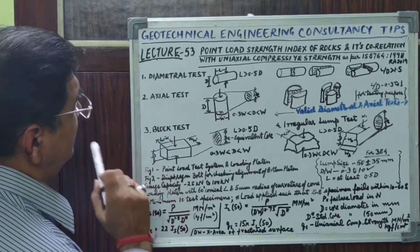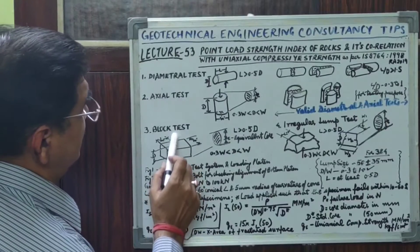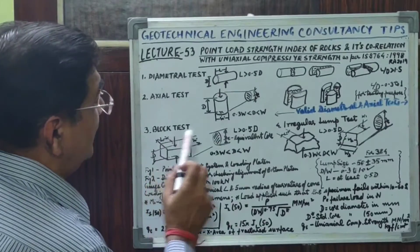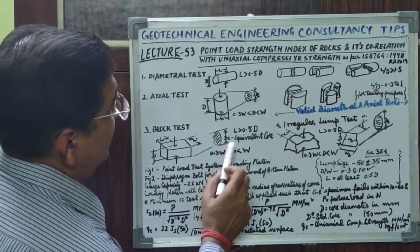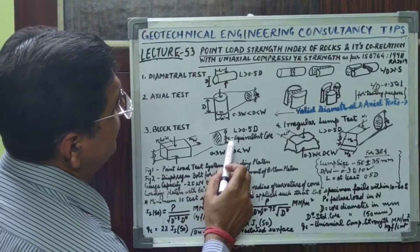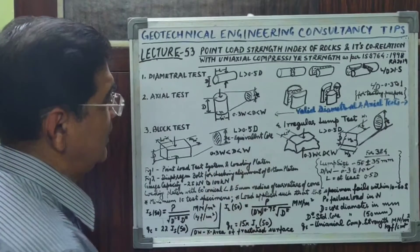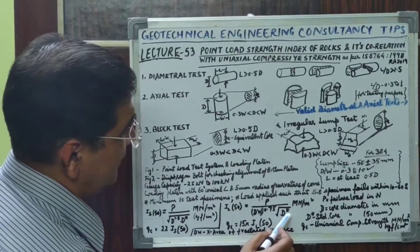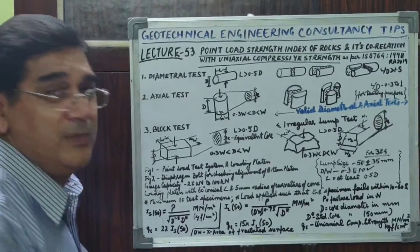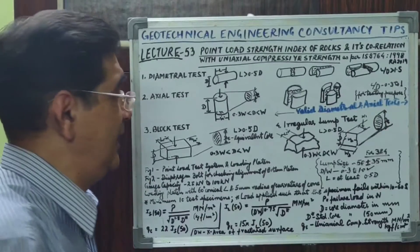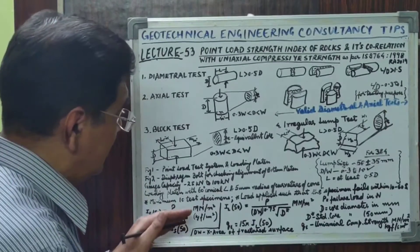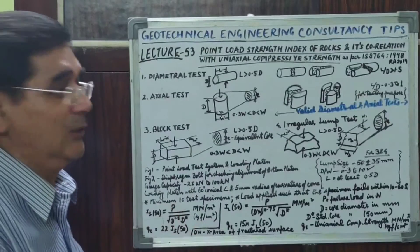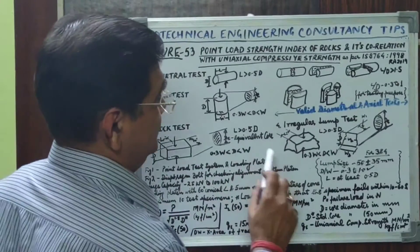In the block test, this is the depth of the sample, this is the point of the sample, and this is the point of application of the load. The equivalent core diameter D* shown is because we have to use D* = 50 mm as the standard size for size correction while doing the calculations.